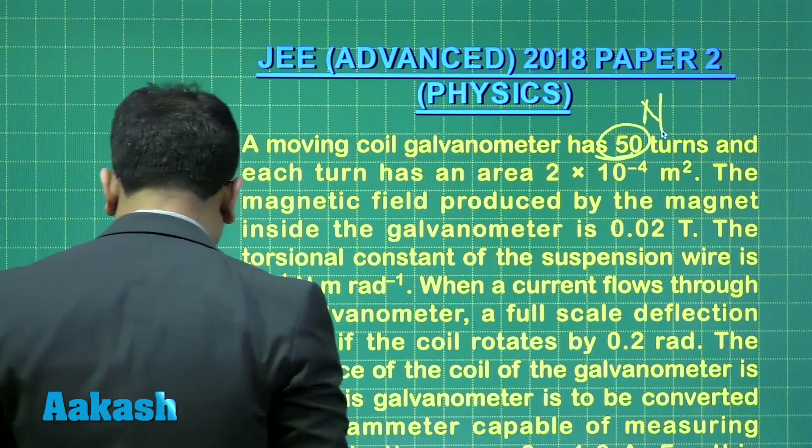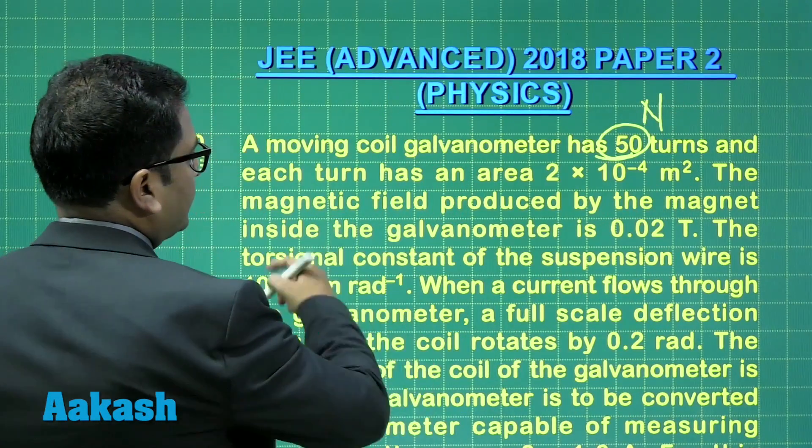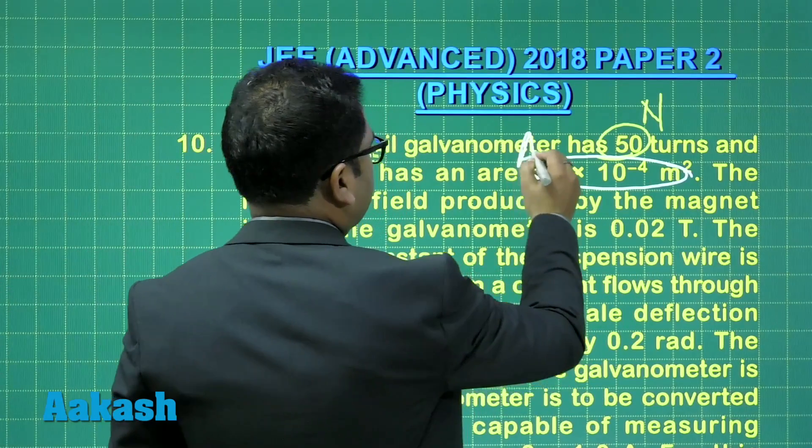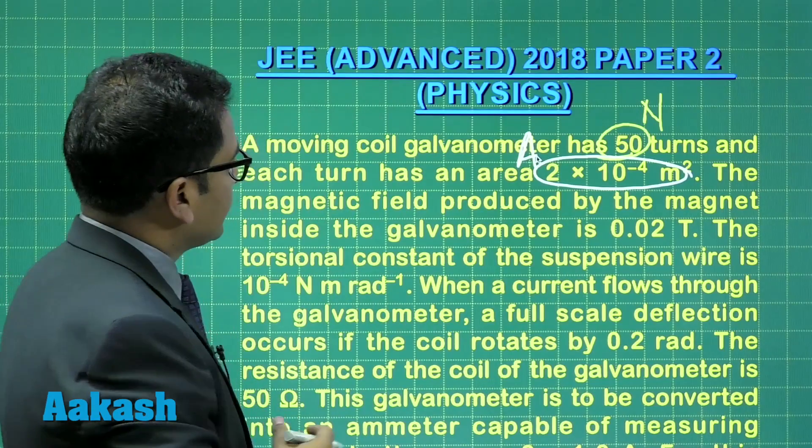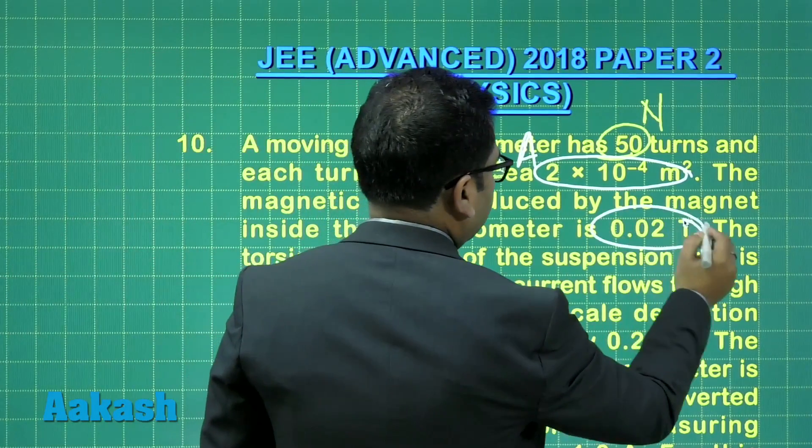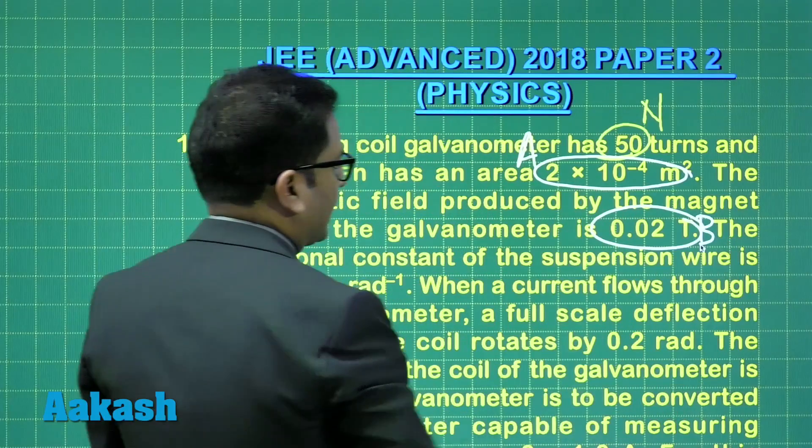Apart from that, each turn has an area, so let me make the variable there: the area A has also been given. The magnetic field produced by the magnet, the B, the magnetic field has also been given.